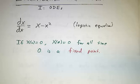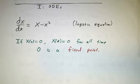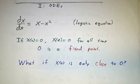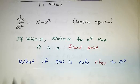So if we start exactly at 0, we forever stay at 0. But what if we start only kind of close to 0? What if we start at x = 0.0001 for example? What happens then?